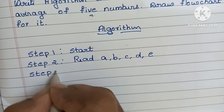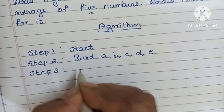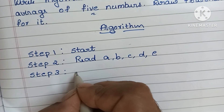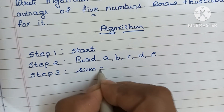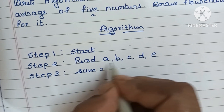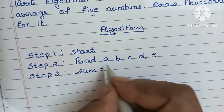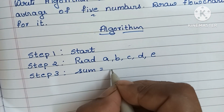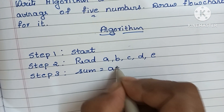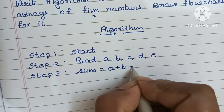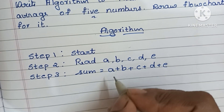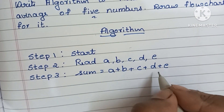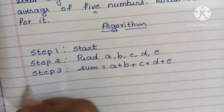In step three, we have to calculate the sum value. Sum is equal to — we have to add these five numbers — that is A plus B plus C plus D plus E. We have to add five variables.